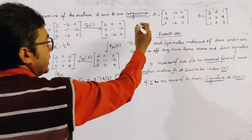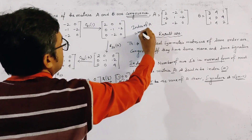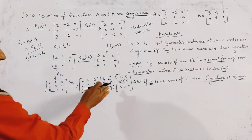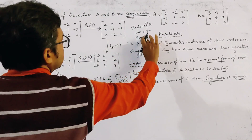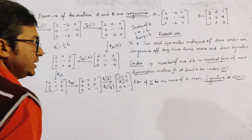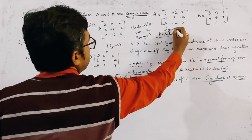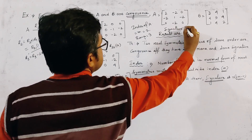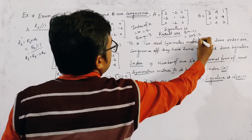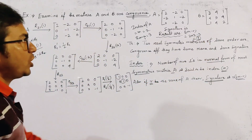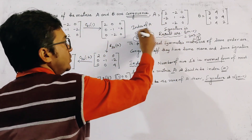So the index of matrix A, M, equals 2. Clearly there are 3 non-zero rows, so the rank of A equals 3. The signature of A equals 2M minus R, which is 2 times 2 minus 3, giving signature of A equal to 1. Therefore, rank of A is 3 and signature of A is 1.